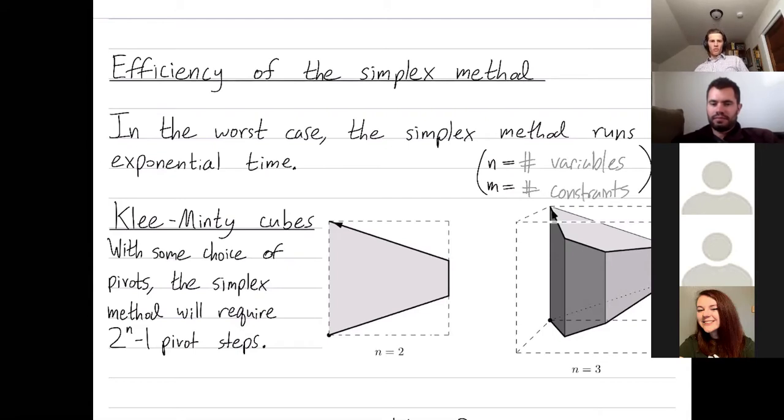So let me describe why you should believe that the simplex method takes exponential time in the worst case. Klee and Minty were the first to prove this, and they proved so using Klee-Minty cubes. So all that those are are cubes, but they're deformed in certain ways so that the simplex method under various pivot rules is forced to visit every single vertex in the cube. So pretend we're optimizing in this direction, which is pointing straight up.